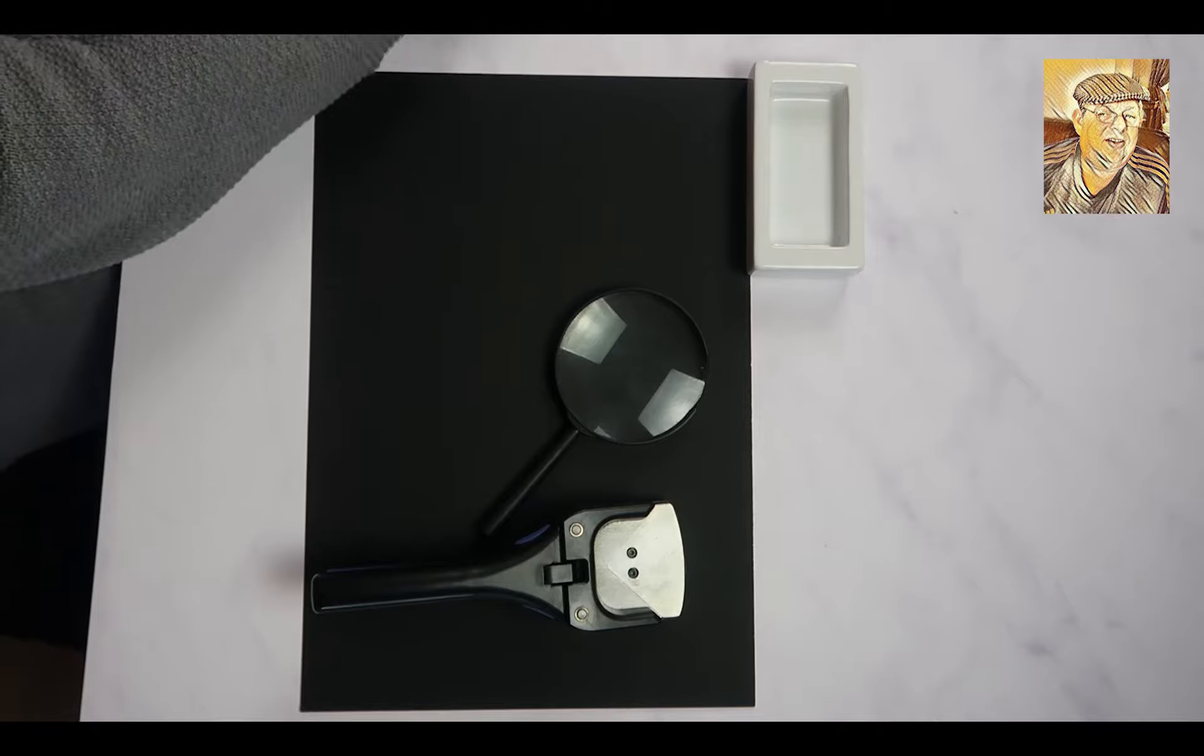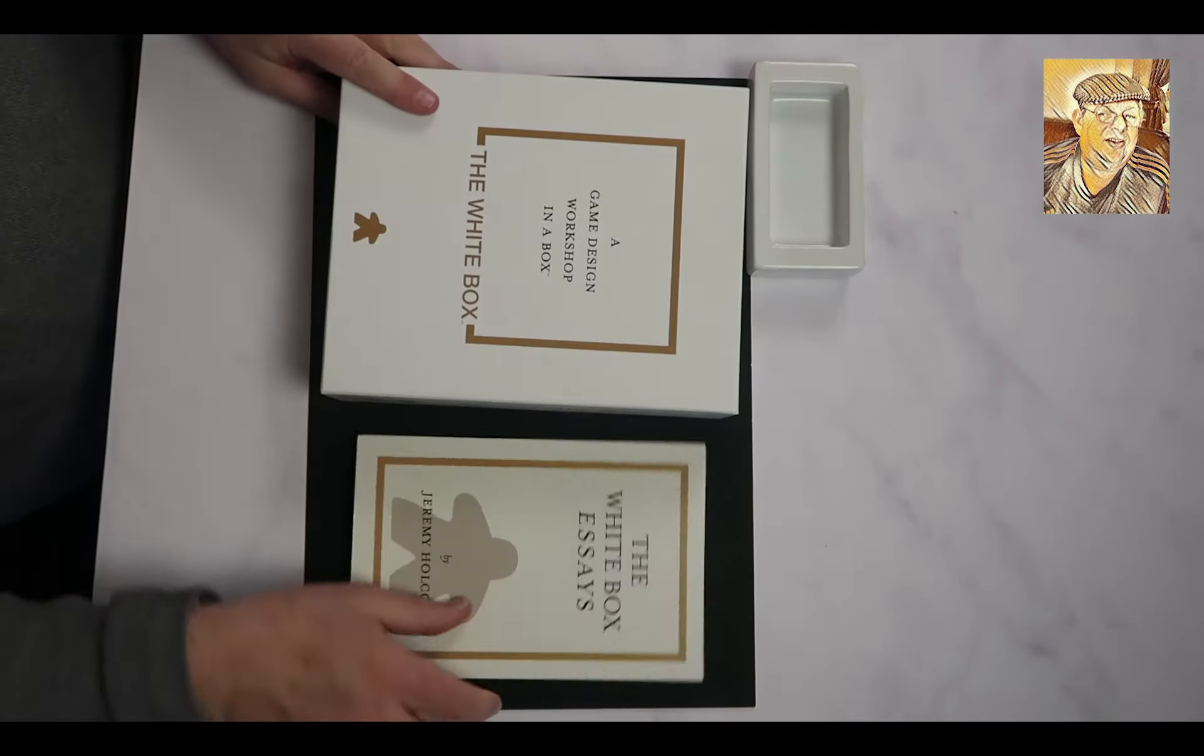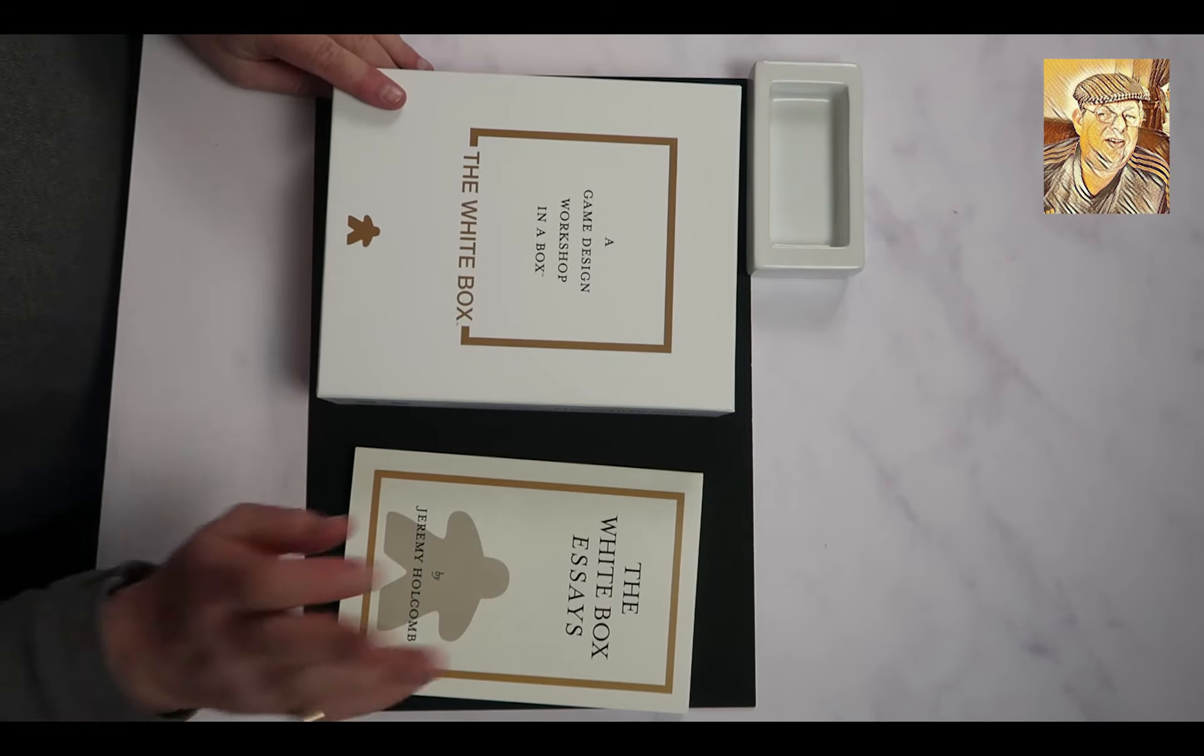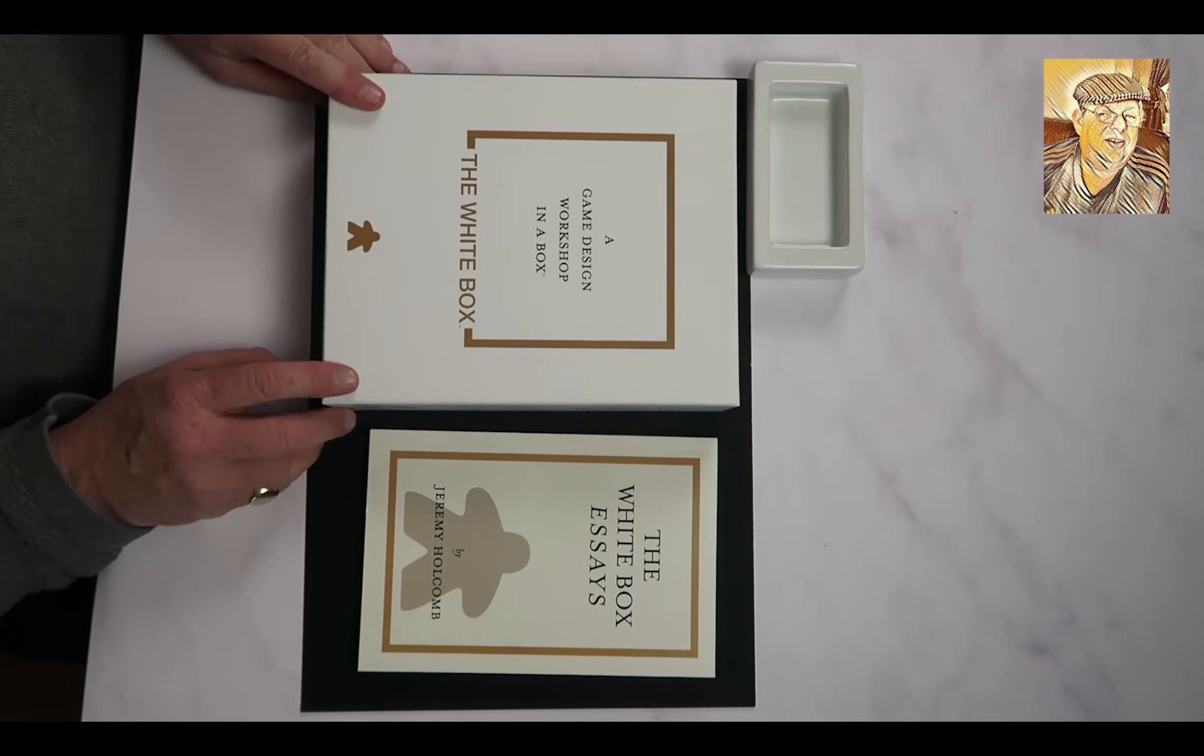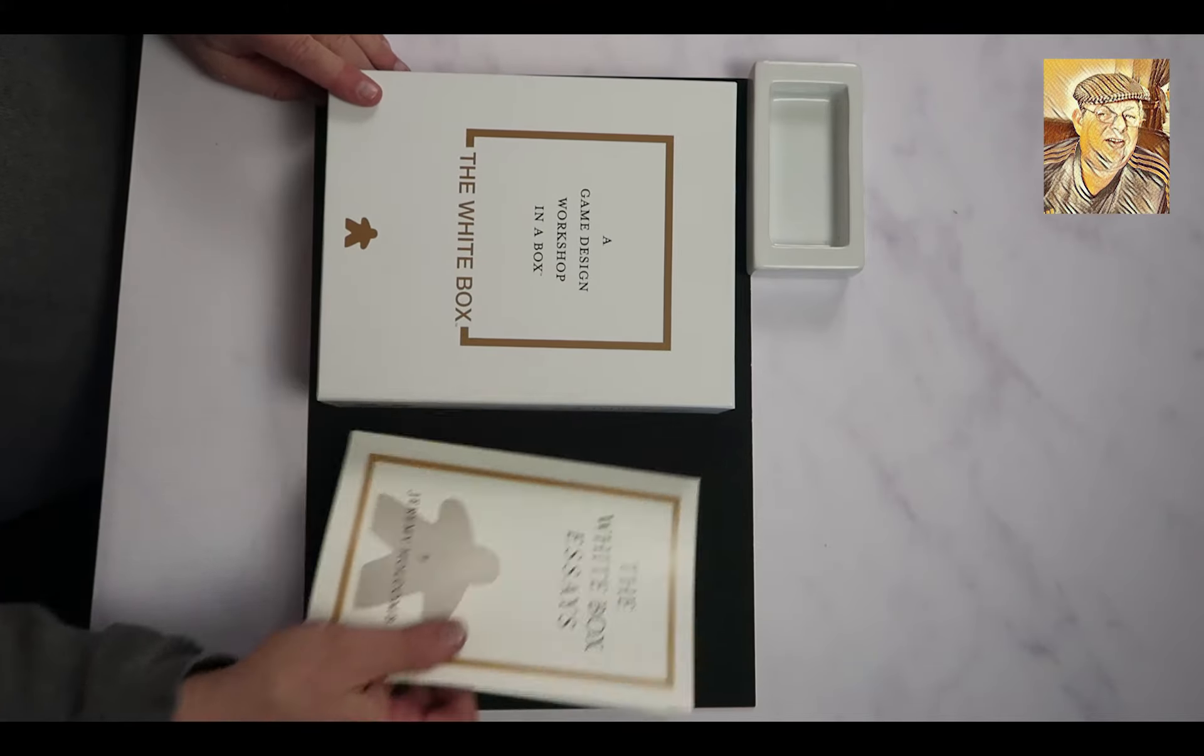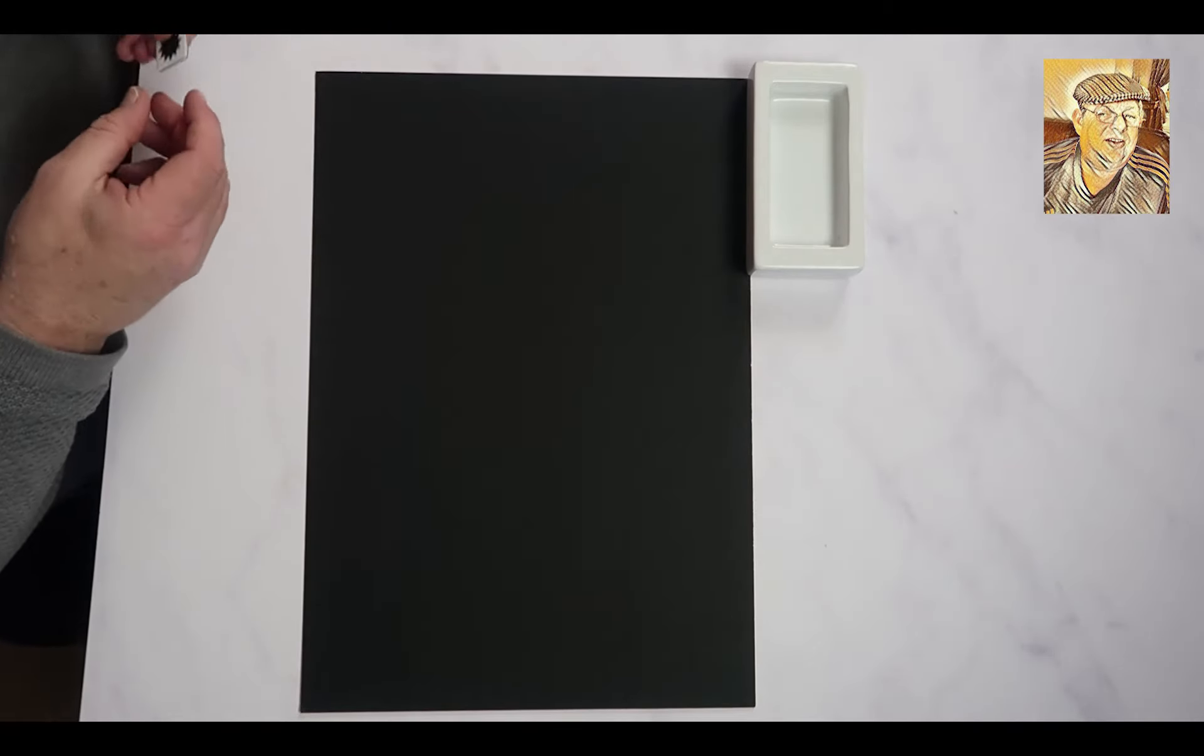And of course we need counters. So I'm going to move all this stuff off here. And the counters that I am going to be using are from the White Box again, Design Workshop in a Box. It includes the book by Jeremy Holcomb called The White Box Essays, and inside the White Box box there are lots of resources which you can use for designing your own game. For example there are meeples and dice and some counters which need to be clipped. Well I think so anyway. So here's one I've done earlier.